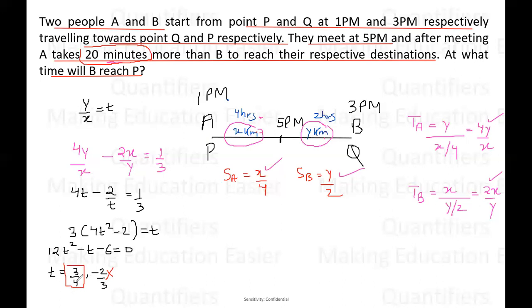Almost the question is over. Y by X we assumed, so we can say that Y by X is basically 3 by 4. Now we are concerned only with B. Now how much time B is taking? B is taking 2X by Y. So students now, if we know that Y by X is 3 by 4, so that means X by Y will be 4 by 3. So time taken by B will be 2 into 4 by 3 hours, which is 8 by 3 hours. And 8 by 3 hours if you convert, this is 2 plus 2 by 3, which is 2 hours and 40 minutes.